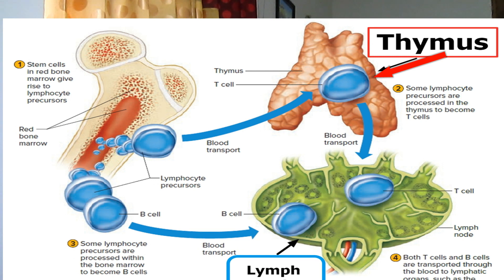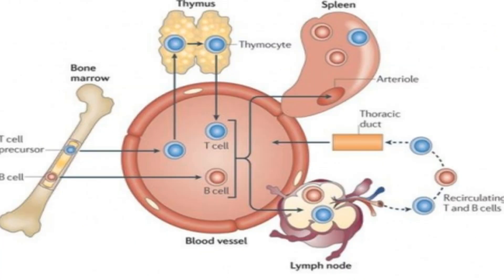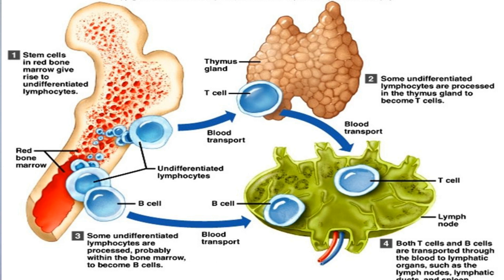T lymphocytes, or T cells, leave the bone marrow and collect in the thymus where they mature. The thymus is a gland that lies in the chest just beneath the sternum. It doubles in size between birth and puberty.